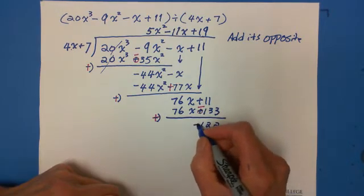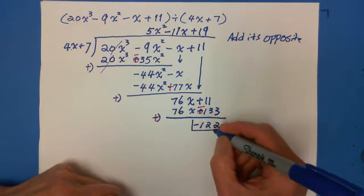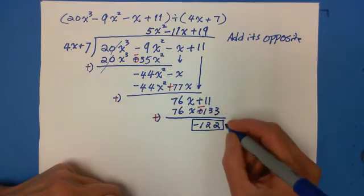And this is positive 11 subtract 133 so we take away 11 from negative 133 which is 122 and also negative. Now this is remainder.